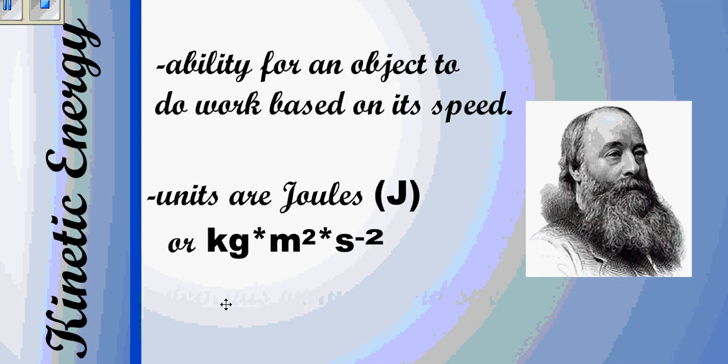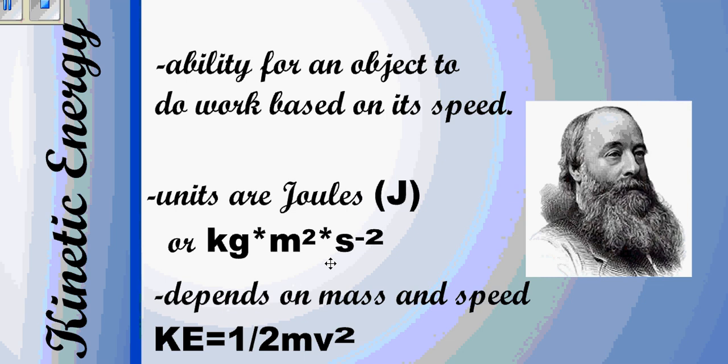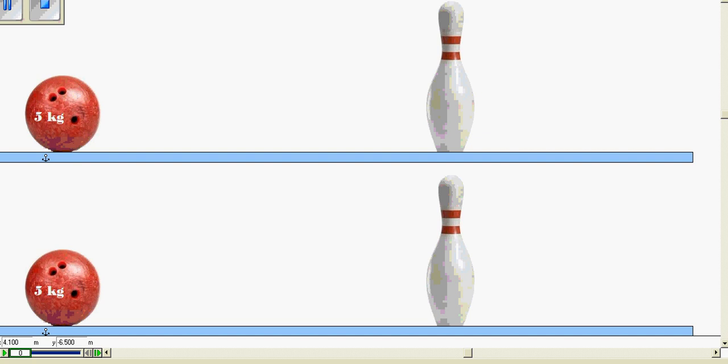And the value of kinetic energy depends on two things, the mass and the speed of an object. Now to demonstrate that, I made a quick little simulation here. Two bowling balls. The top one and the bottom one are both five kilograms.